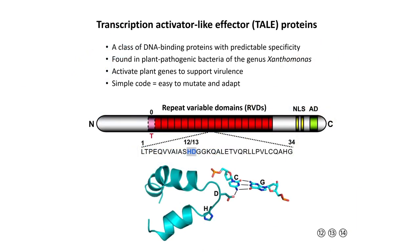Transcription activator-like effector proteins, or TALE proteins, are found in plant pathogenic bacteria of the genus Xanthomonas. They are a class of DNA binding proteins which have a predictable DNA specificity. These effectively function as transcription factor genes, and their role in Xanthomonas is to activate specific host plant genes to support the virulence of Xanthomonas.